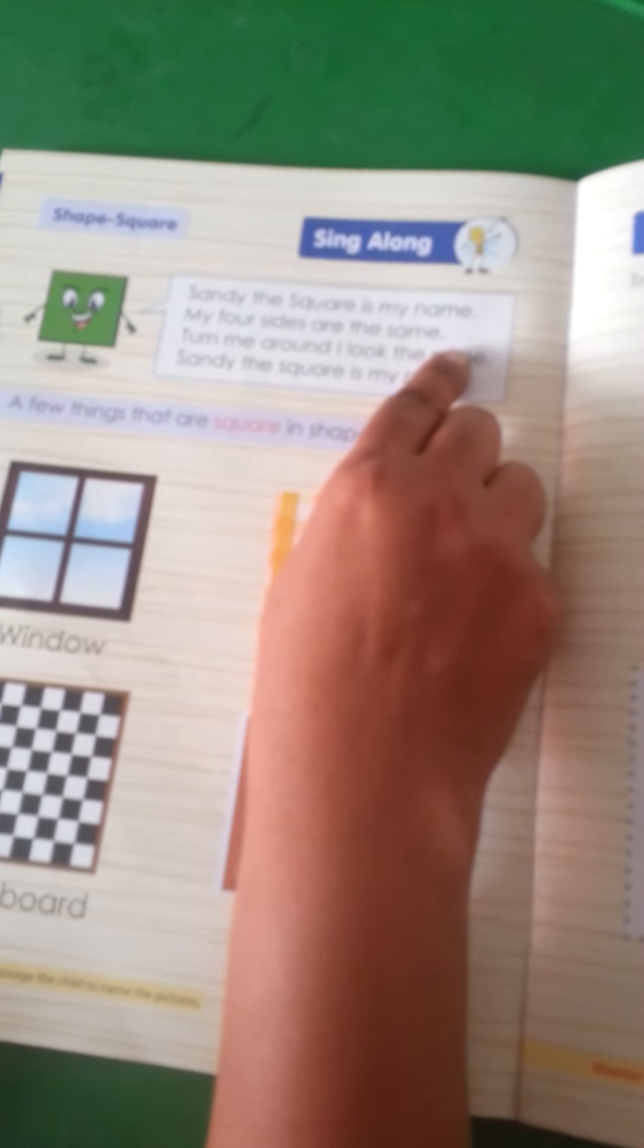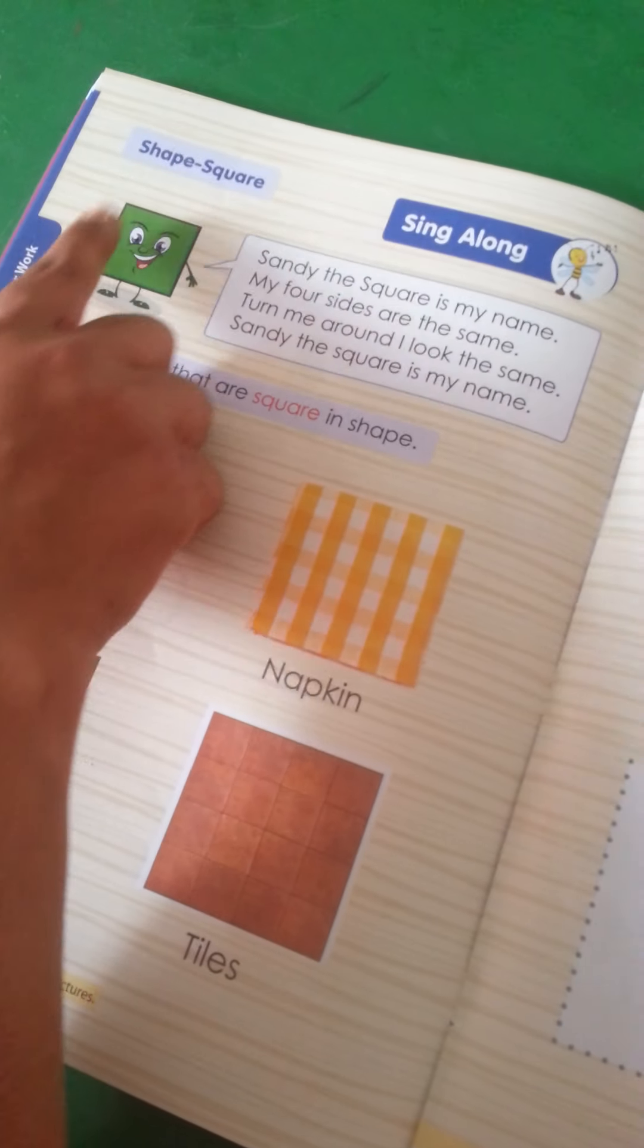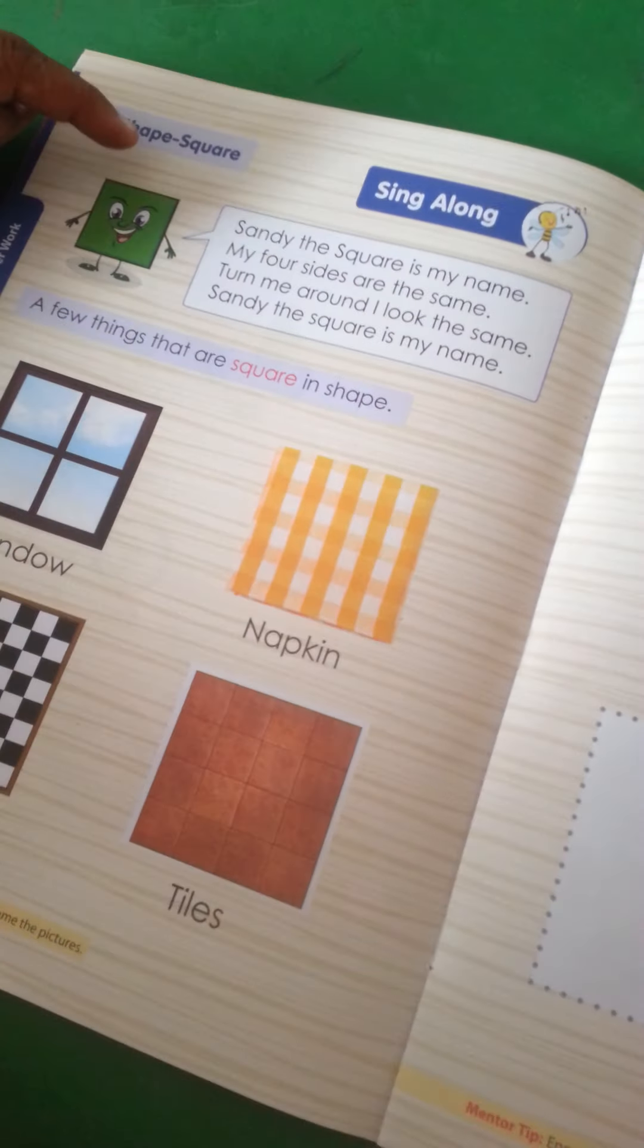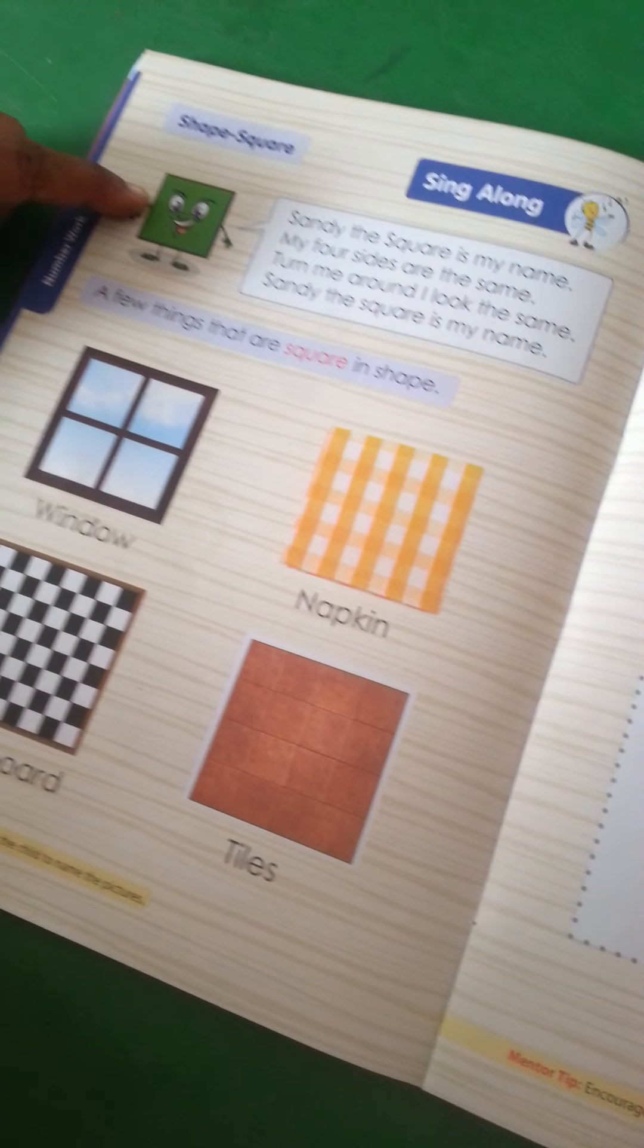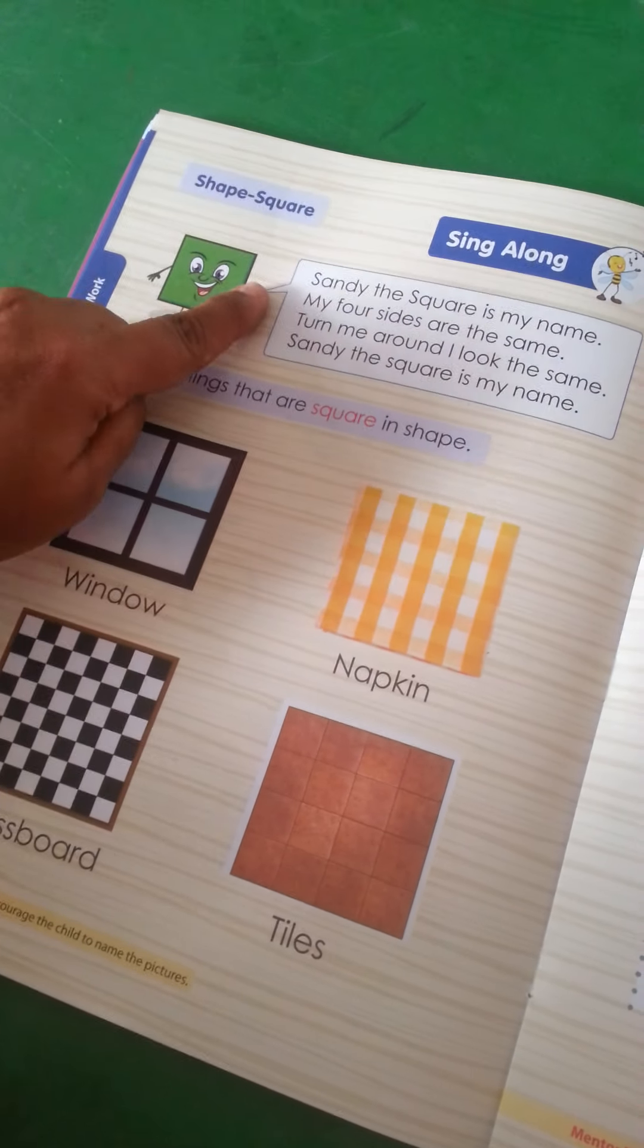My four sides are the same. See this? Ye hai Sandy the square. Aur iske four sides equal hai. Let's count. One side, two side, three side and four side.